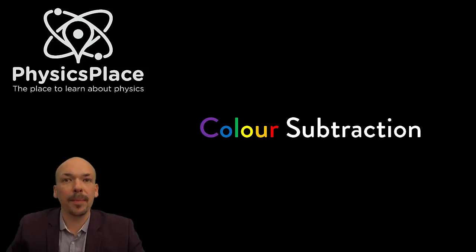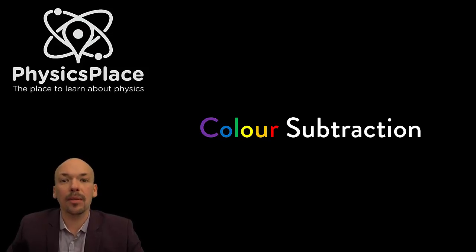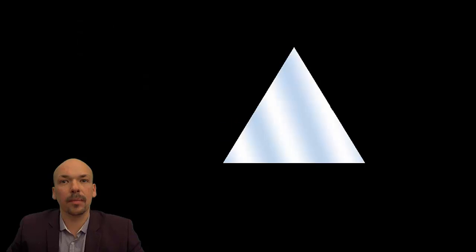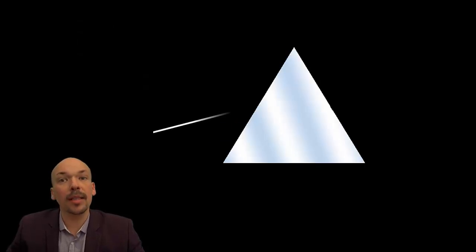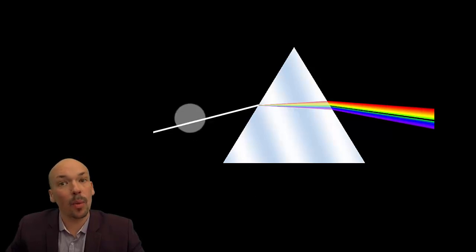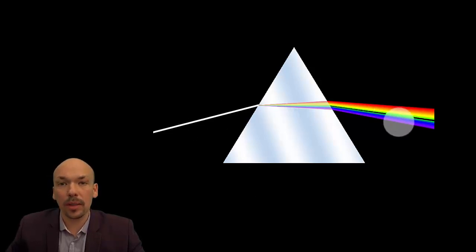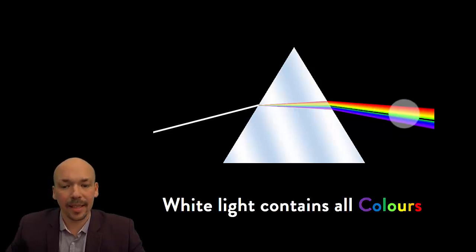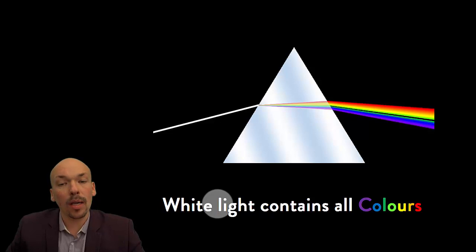Welcome to the physics place, the place to learn about physics. In this video I'm going to talk about color subtraction. In my previous video I showed that white light actually contains all colors, and you can see it when it goes through a prism. You can see that from the white light all these colors are inside there. So white light contains all colors.